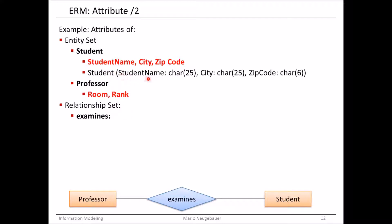In brackets we write: student name, colon, and the type of the student name — char(25), meaning 25 characters. The next attribute is city, also of type char(25). The zip code is shorter, so it has only six chars. The professor also has attributes — two attributes: room and rank. You could also write up that definition in textual notation.